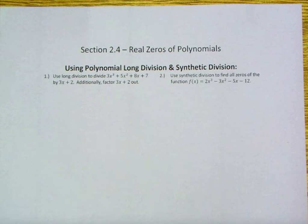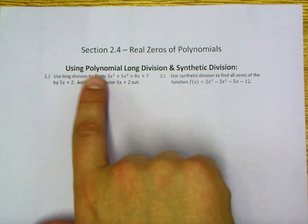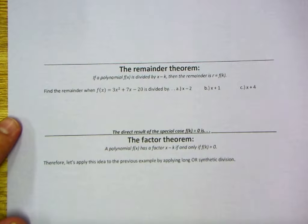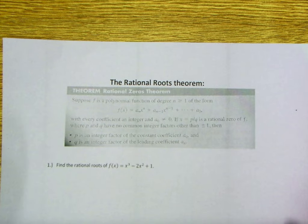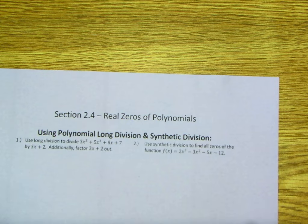Hey guys, welcome to section 2.4, where today we're going to take a look at the real zeros of polynomials. This is actually just day one. We're going to be spending a couple different days here, working through and reminding ourselves of how long and synthetic division work, and then really adding on to that. There are a variety of new theorems over the course of 2.4. I wanted to introduce three of those today: the remainder theorem, the factor theorem, and finally the rational roots theorem, to better understand some of these deeper connections regarding polynomials.